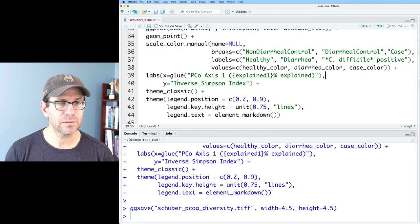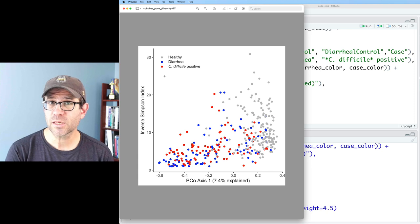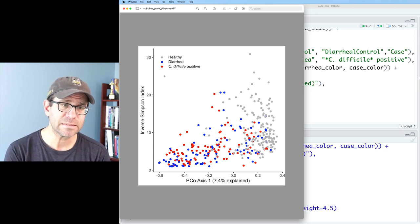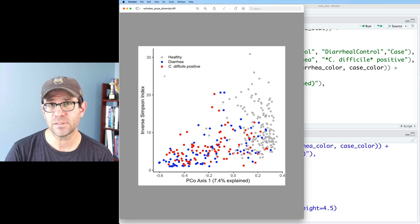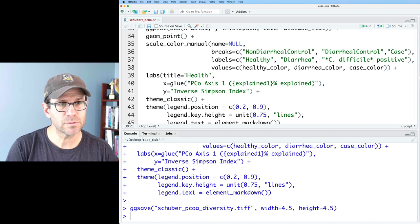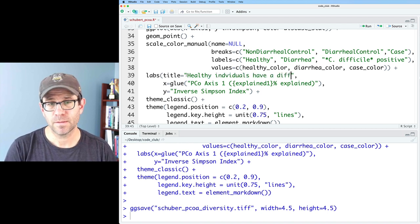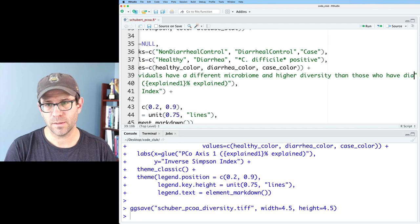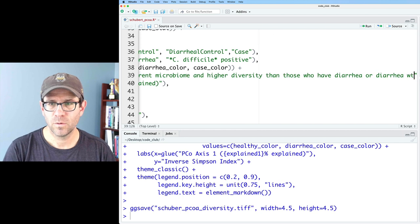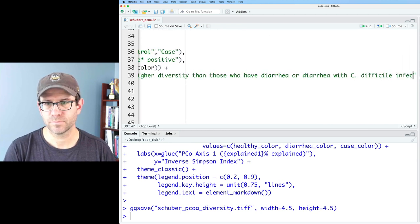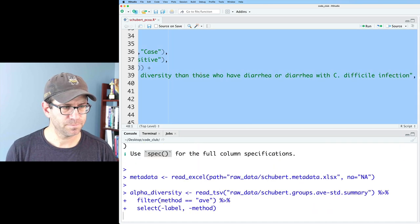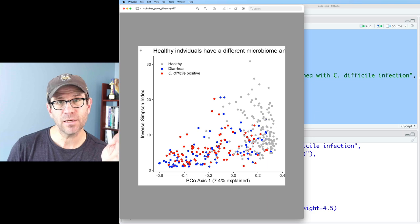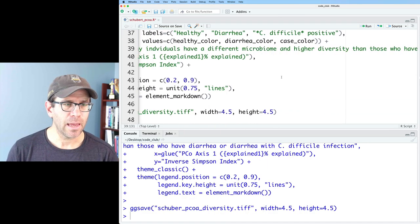Let's go ahead and add a title to our plot. Looking at our figure, there's two things we want to say that we want the audience to pick up on. First, there's separation in the community structure according to disease status. And second, that healthy individuals have a higher diversity than those individuals that have diarrhea. So I'll say healthy individuals have a different microbiome and higher diversity than those who have diarrhea or diarrhea with C difficile infection. Let's give that a run. And of course, it runs the title off the side there, as we've seen in the past.